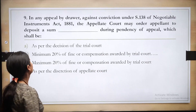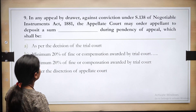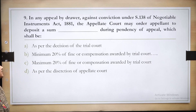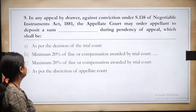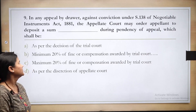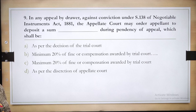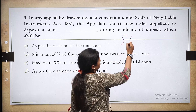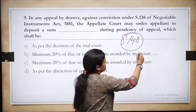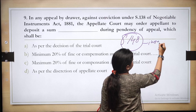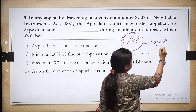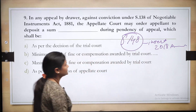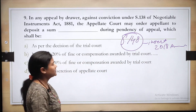Ninth question: In any appeal by the drawer against conviction under section 138 of the Negotiable Instruments Act, the appellate court may order the appellant to deposit a certain sum during pendency of the appeal. This provision was inserted by section 148 via the 2018 amendment, which gave the appellate court power to order a deposit during the appeal's pendency.